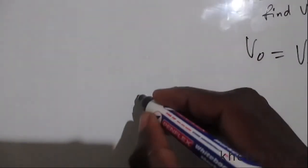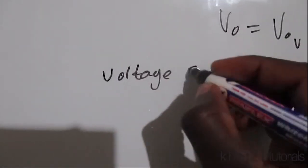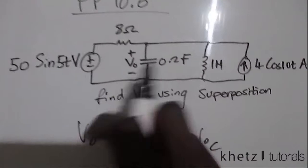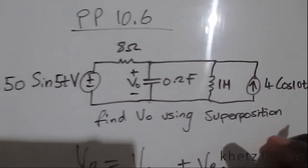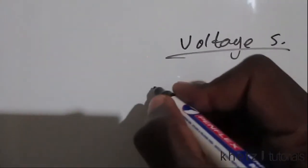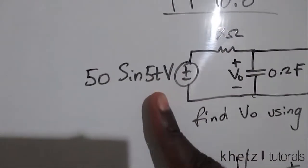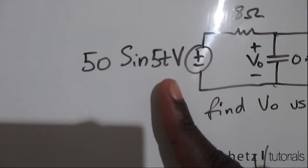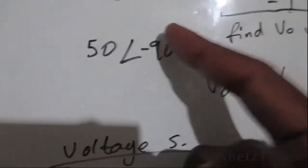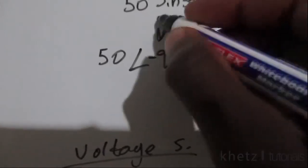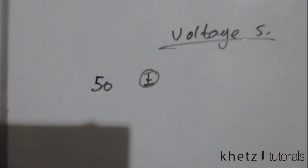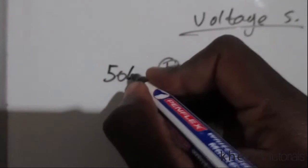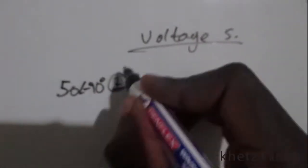Let's proceed. We're now going to find the contribution of the voltage source. We'll have a new circuit that takes the effect of the current source out. Let's transform the source into cosine form — 50 with an angle of negative 90 degrees — which makes it easy to punch into your calculator. So we have 50 at negative 90 degrees, then the rest of the circuit.